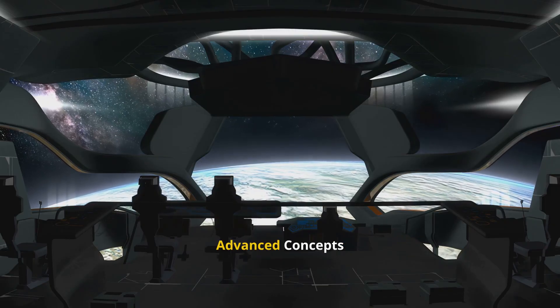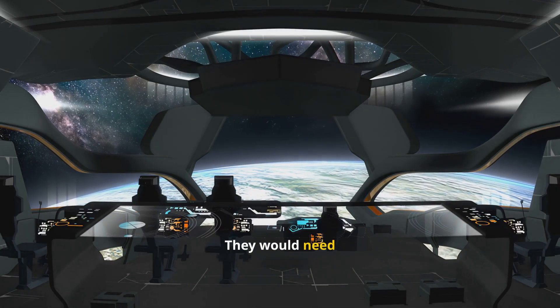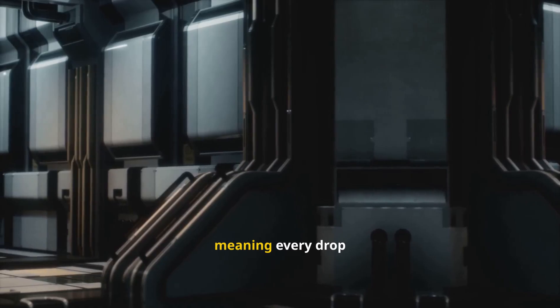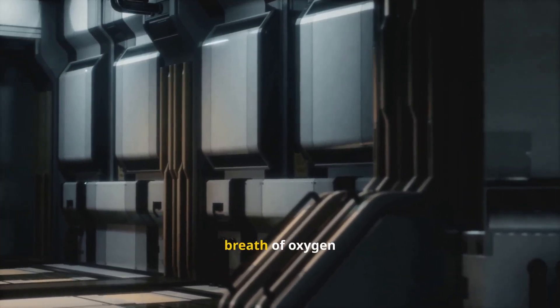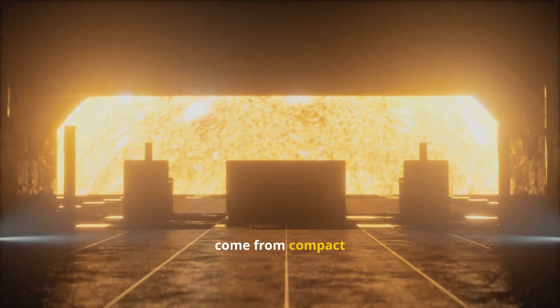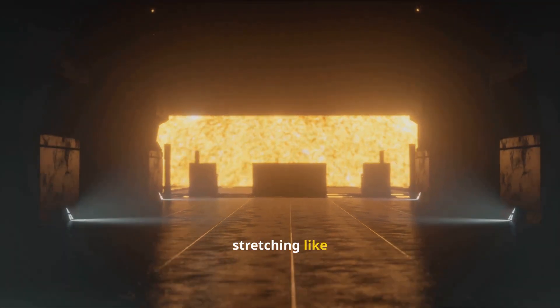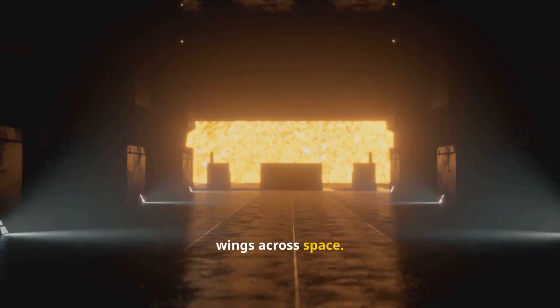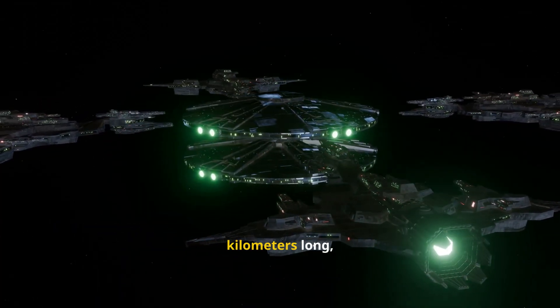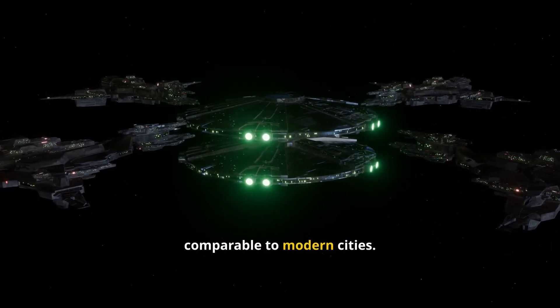Researchers at places like NASA's Advanced Concepts Office have studied what such ships would require. They would need closed-loop life support, meaning every drop of water and every breath of oxygen gets recycled. Energy would likely come from compact nuclear fusion reactors or massive solar collectors stretching like wings across space. Some proposals imagine ships kilometers long, vast habitats carrying populations comparable to modern cities.